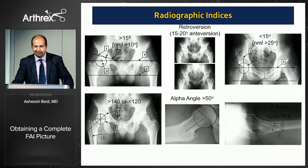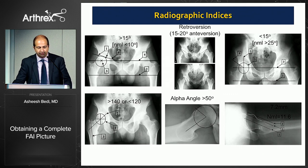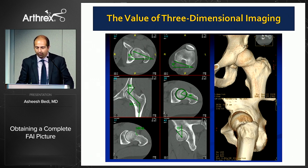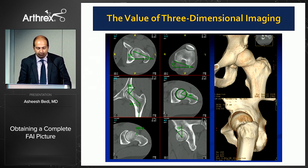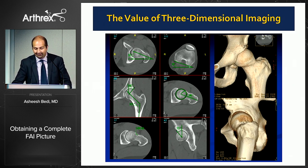Brian showed us all those measures — the alpha angle, lateral center edge angle, head-neck offset, Tönnis angle. The concepts are fairly simple, but all of these are two-dimensional surrogate measures for a three-dimensional problem. In my practice, that means increased use of 3D imaging. If a patient's going to the operating room with FAI, I tend to get a low-dose protocol CT to look at acetabular version, femoral version, neck shaft angle, and characterize the 3D deformity of the cam lesion.